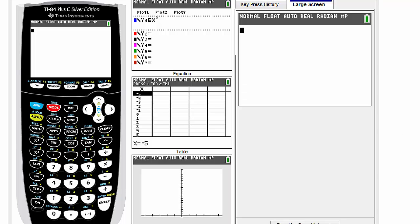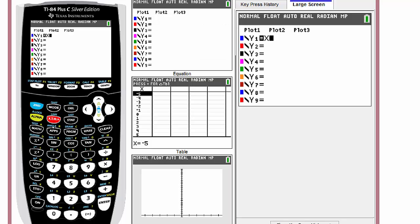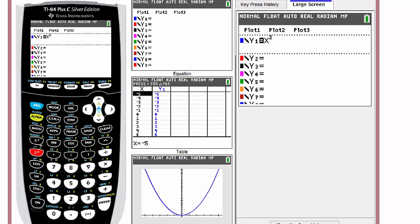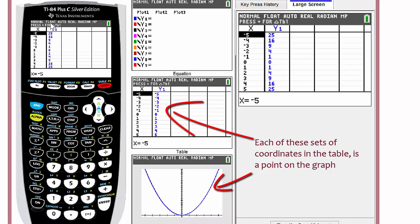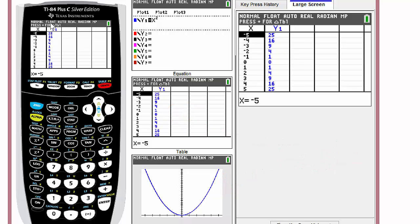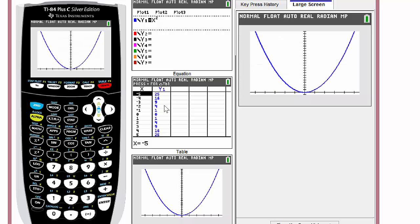If I enter y equals x squared on my calculator, I can clearly see that the points on the graph correspond to the table of values. When x is 1, y is 1. When x is 2, y is 4. When x is 3, y is 9. And I can do that even by using the trace feature on the calculator. For 3, we go to 9. For 5, 25. Negative 4, 16. We can see those values quite clearly.